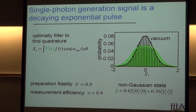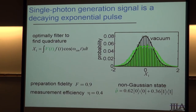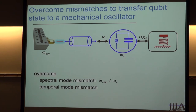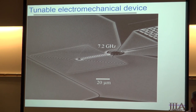Now imagine we actually wanted to catch this pulse and turn it into mechanical motion. We would have to build an electromechanical structure with its resonance frequency exactly at 5.8 gigahertz, and we have to catch not a rising exponential pulse but a decaying exponential pulse. So we have to overcome both the spectral mode mismatch and the temporal mode mismatch.